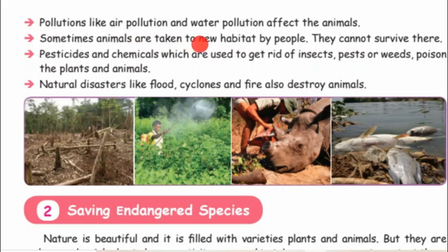Sometimes animals are taken into a new habitat by people. In that new environment, they cannot survive. Pesticides and chemicals which are used to get rid of insects, pests, or weeds also poison the plants and animals.